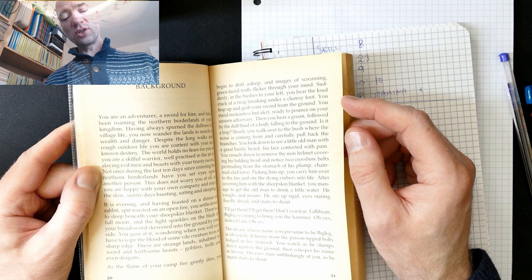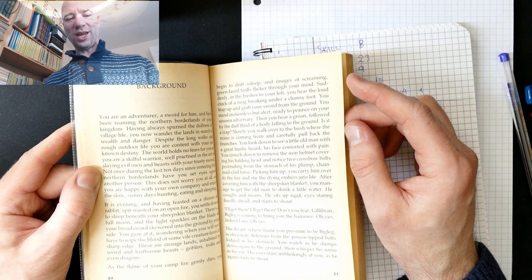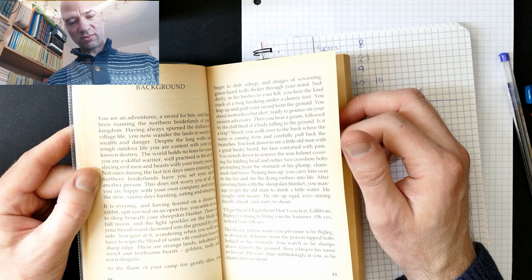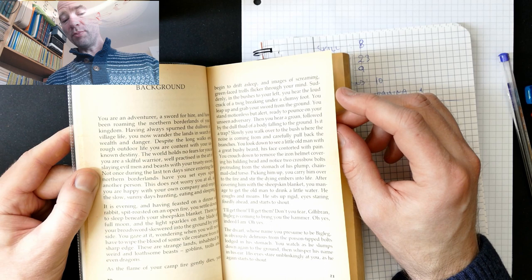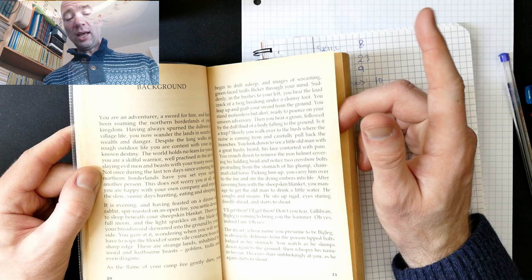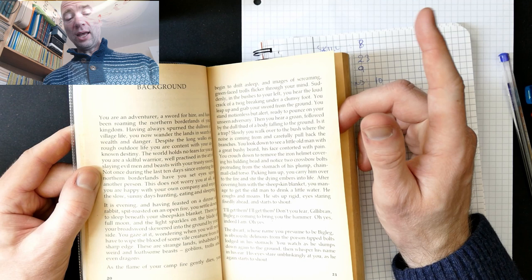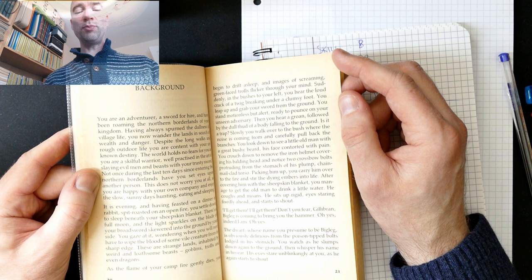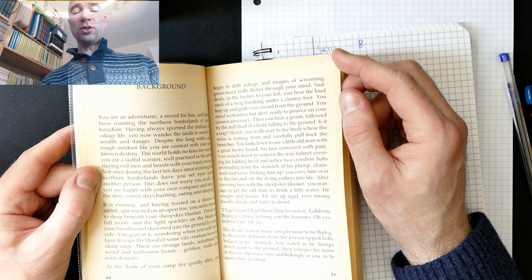It is evening, and having feasted on a dinner of rabbits, spit-roasted on an open fire, you settle down to sleep beneath your sheepskin blanket. There's a full moon, and the light sparkles on the blade of your broadsword, skewered into the ground by your side. Why would you skewer your broadsword into the ground by your side? I know it looks cool in paintings, but I mean, seriously, you put it in the ground, it'll rust. You gaze at it, wondering when you will next have to wipe the blood of some vile creature from its sharp edge. Also, it dulls the edge. These are strange lands, inhabited by weird and loathsome beasts, goblins, trolls, and even dragons.